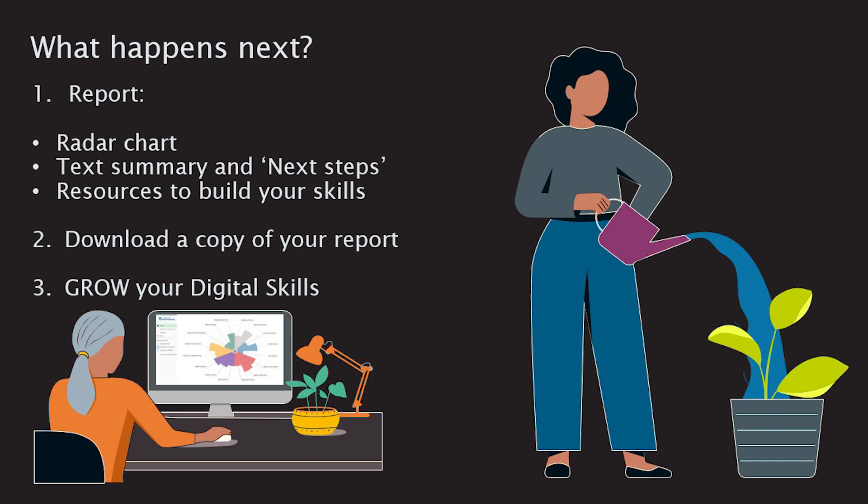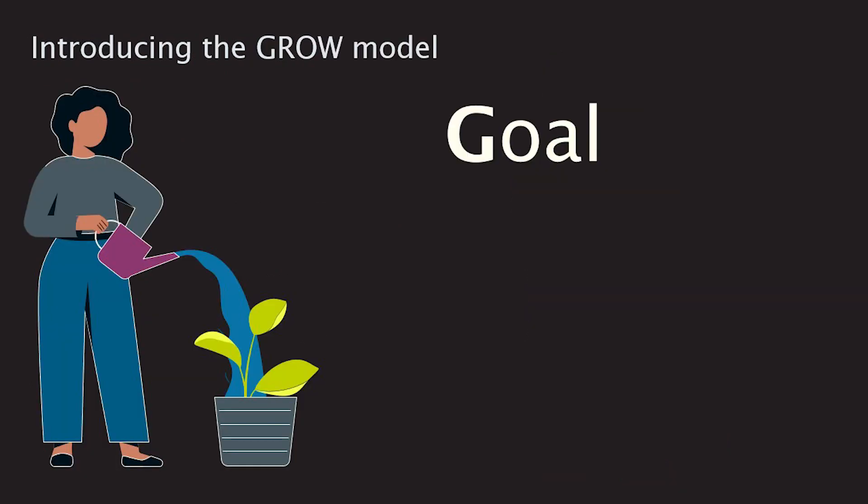If you want to improve your digital skills, we can show you how using the four-step GROW model. The first stage is identifying and setting a goal or aspiration for the future. What do you want to achieve? How will this goal fit in with your current plans? You'll also need to think about when you will achieve that goal, who else might benefit, and what achieving the goal will feel like.